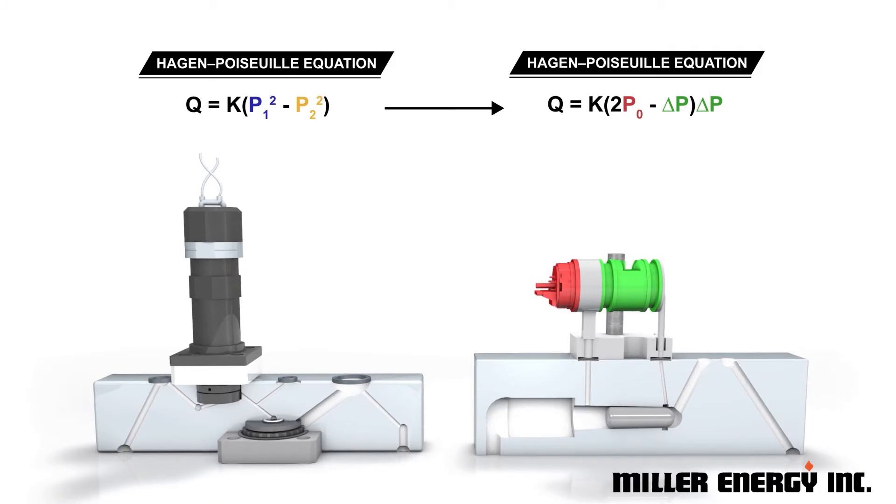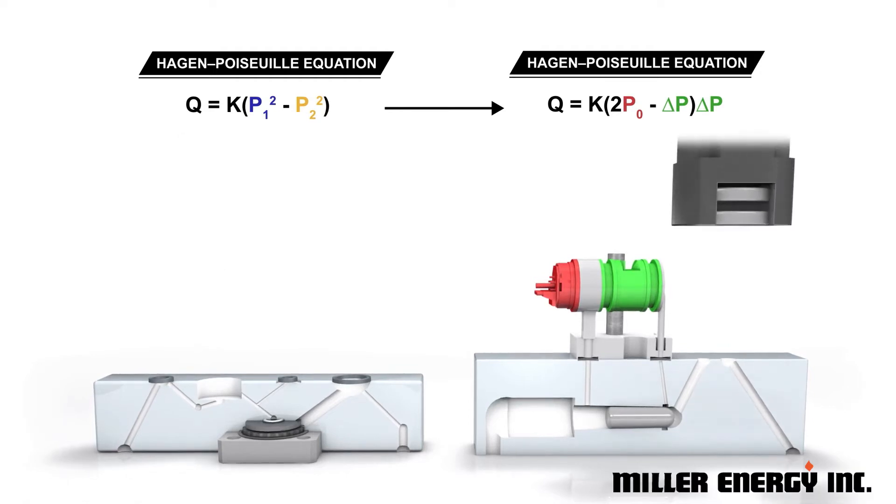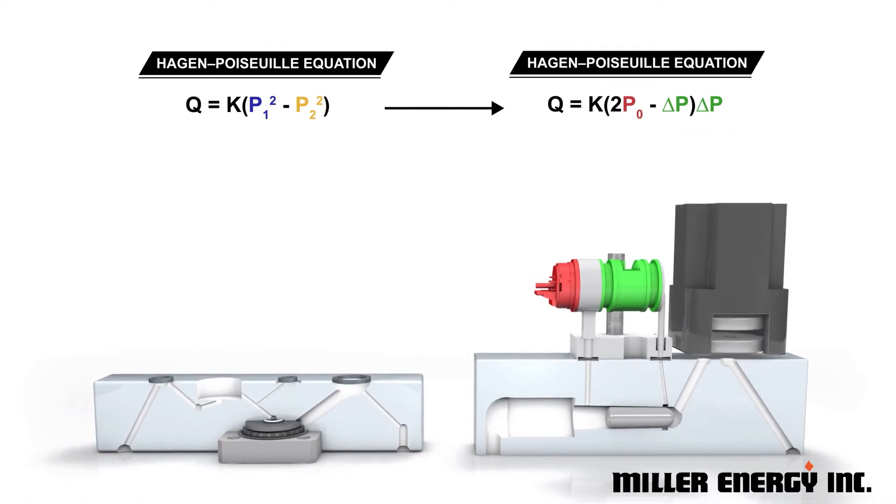The GP200 replaces the need to match P1 and P2 by using a true differential pressure sensor. By rewriting the equation, we're able to measure the true differential pressure versus a derived differential pressure using discrete P1 and P2 values.